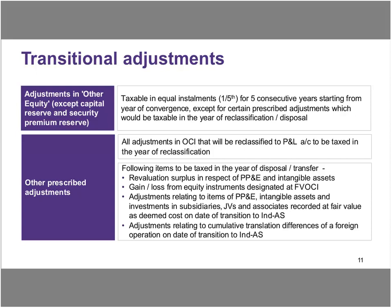The prescribed adjustments are: all adjustments in OCI that will be reclassified to P&L account to be taxed in the year of reclassification. There are special carve-outs also. The following items are to be taxed in the year of disposal or transfer: revaluation surplus in respect of property, plant and equipment and intangible assets; gains or losses from equity instruments designated as FVOCI; adjustments relating to items of PPE and intangible assets and investments in subsidiaries, JVs and associates recorded at fair value as deemed cost on the date of transition; and adjustments relating to cumulative translation differences of foreign operations on date of transition to Ind AS. Everything else goes into transition amount to be taxed in five years from the year of convergence.